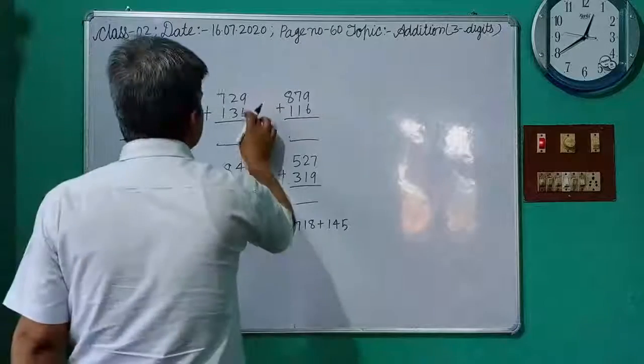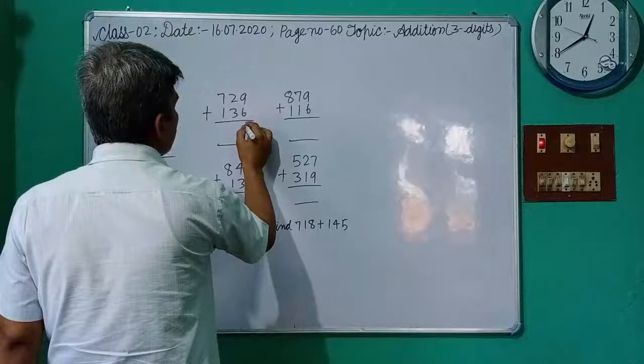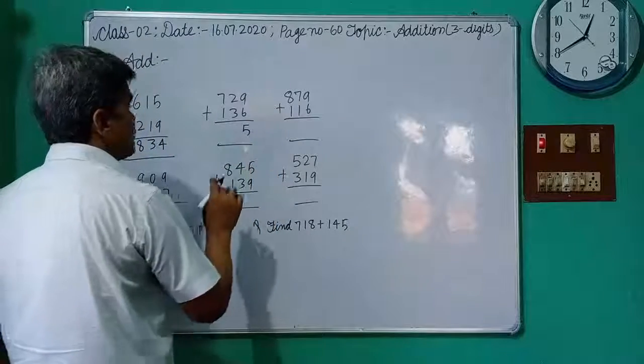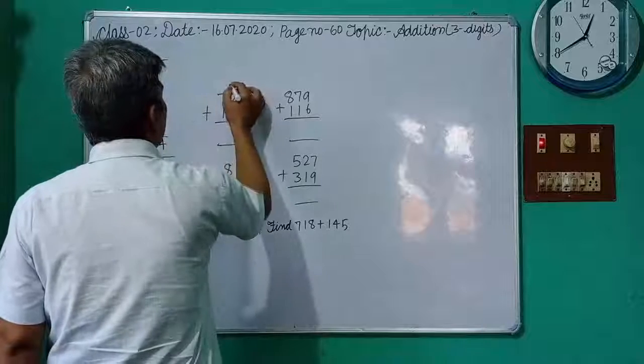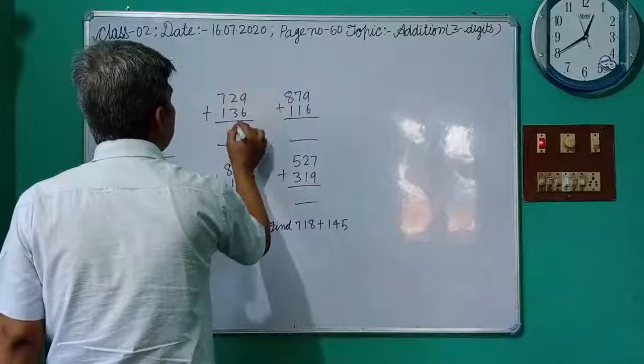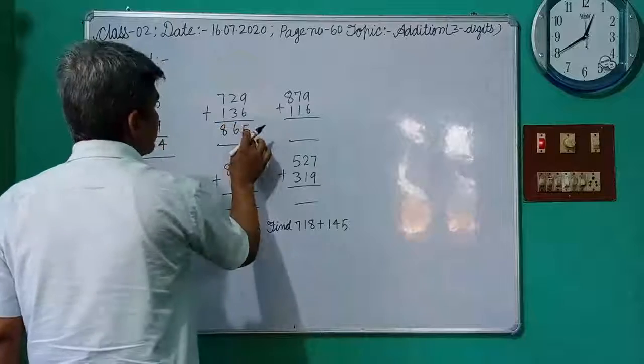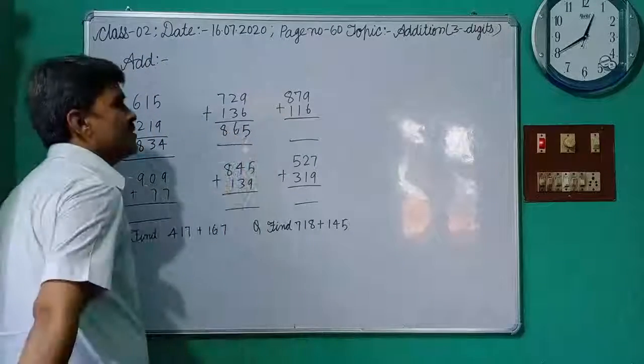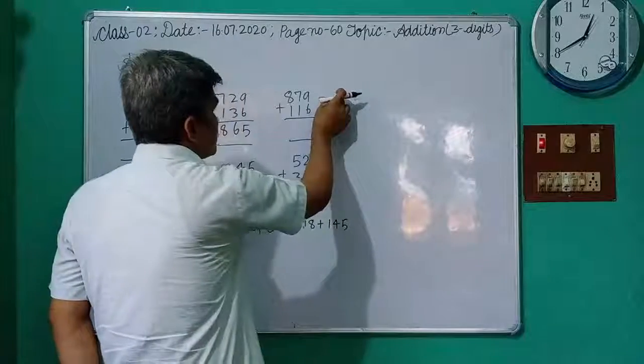Now next: 724 plus 131. 9 plus 6 is 15. Here write down 15? No, 5. 1s digit, not 10s digit. 5 and 1. 3 plus 2 is 5, 5 plus 1 is 6. 7 plus 1 is 8. 1s digit is 5, 10s digit is 6, and 100s digit is 8.